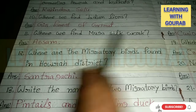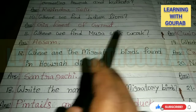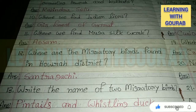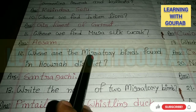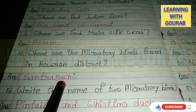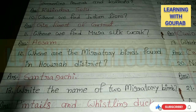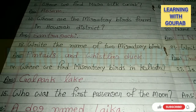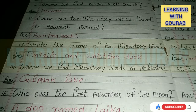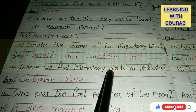Where do we find Mooga silk work? Answer: Assam. Where are the migratory birds found in Howrah district? Answer: Santragachi. Write the names of two migratory birds. Answer: Pintails and Whistling Duck. Where can we find migratory birds in Kolkata? Answer: Gold Park Lake.